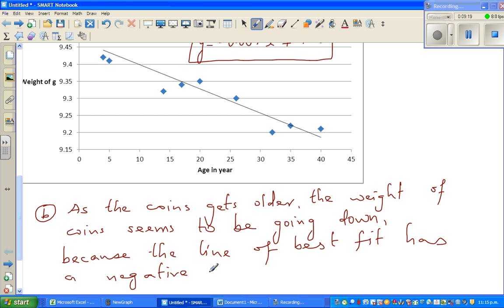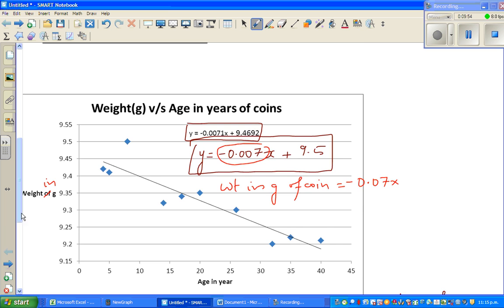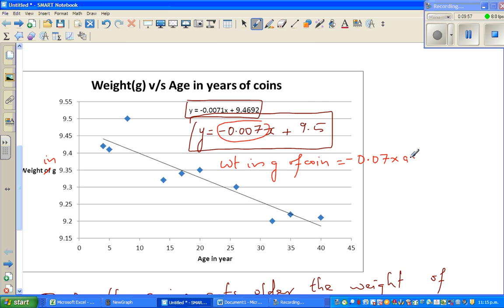That means the negative gradient. Now gradient I hope you know is the number that sits with your variable which is x. So if you want to write in terms of weight and age, this y is nothing but weight in grams of coins is equal to negative 0.007 times what is your x, x is the age of coin plus this 9.5. So your x is the age of coin and y is weight in grams of coins.